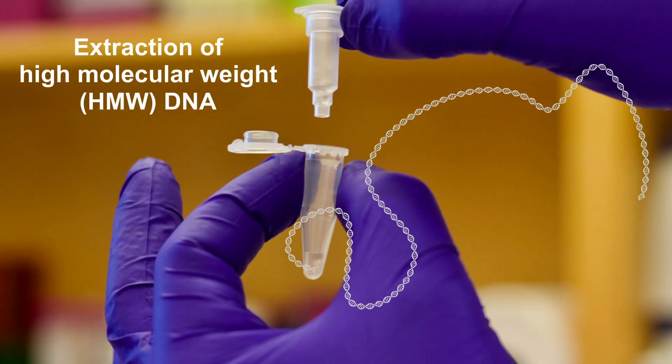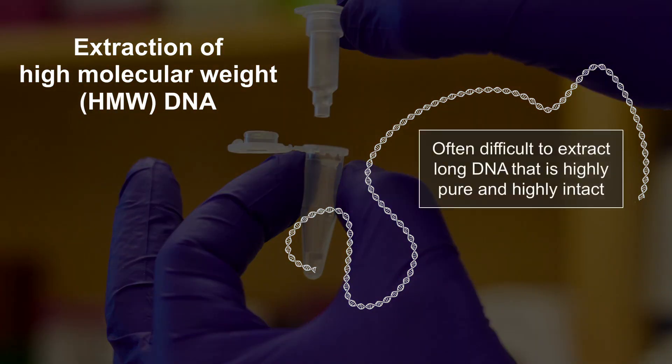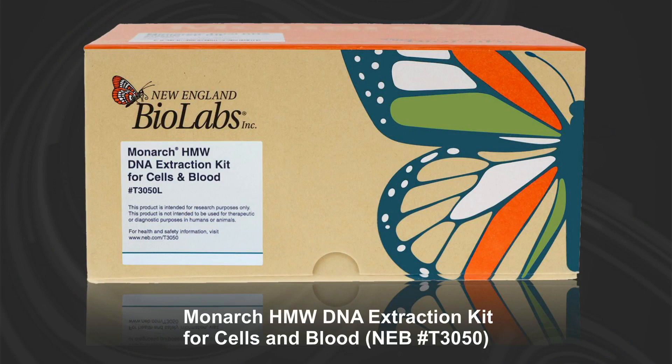Extraction of high molecular weight DNA is important for applications that require the use of very long DNA molecules, such as long-read sequencing and genome assembly. It is often difficult to extract long DNA that is highly pure and highly intact, but the Monarch High Molecular Weight DNA Extraction Kit for Cells and Blood enables this to be done quickly and effectively.